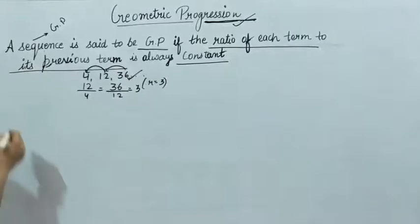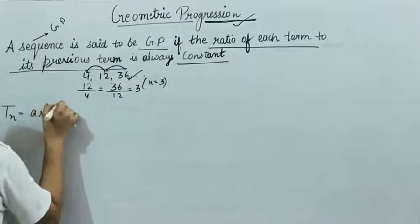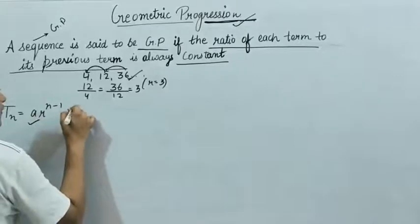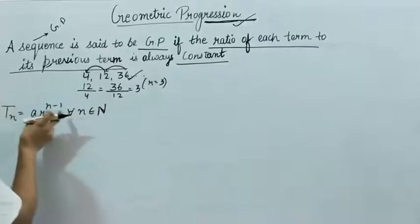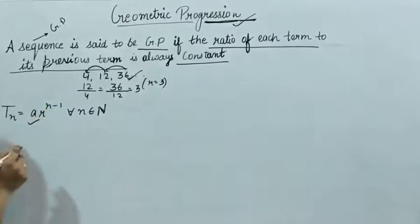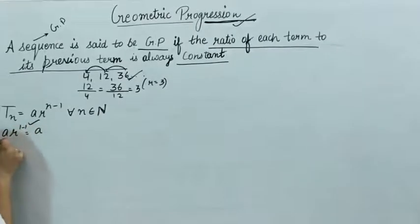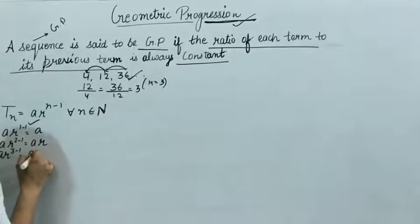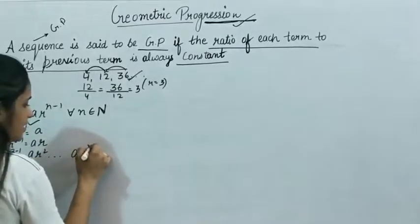Now, what is the general term of a GP? The general term is a·r raised to power (n minus 1), for all n belonging to natural numbers. Putting n = 1, 2, 3 and so on, you get a·r^0 = a, then a·r^1 = ar, then a·r^2, and so on up to a·r^(n-1).